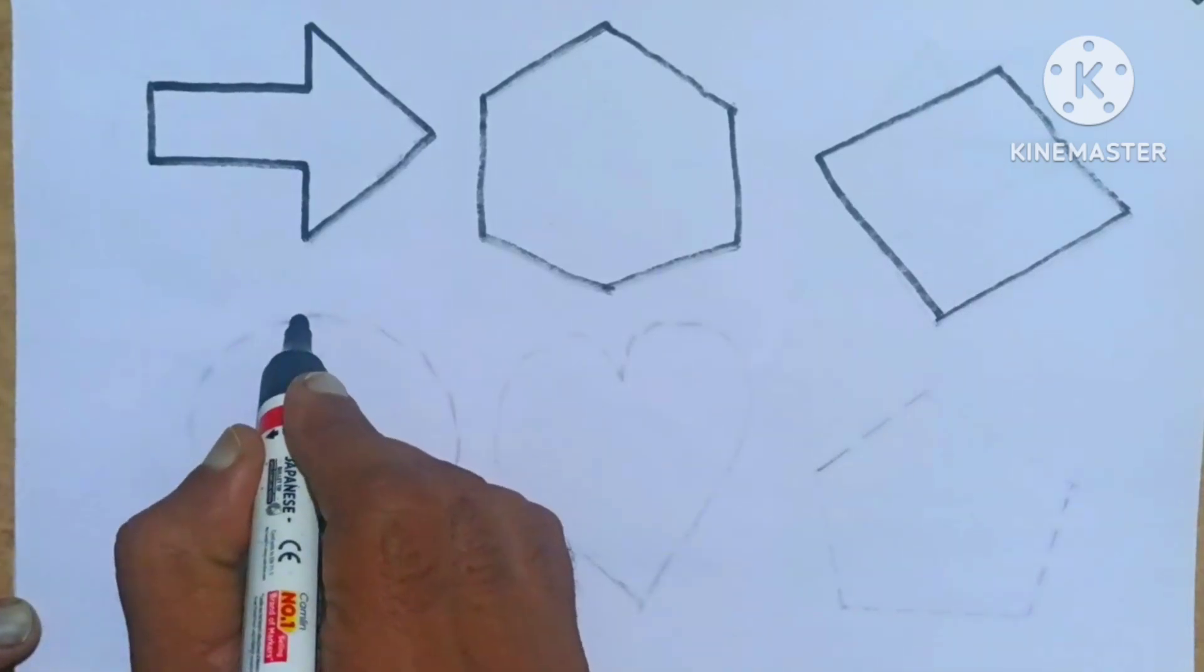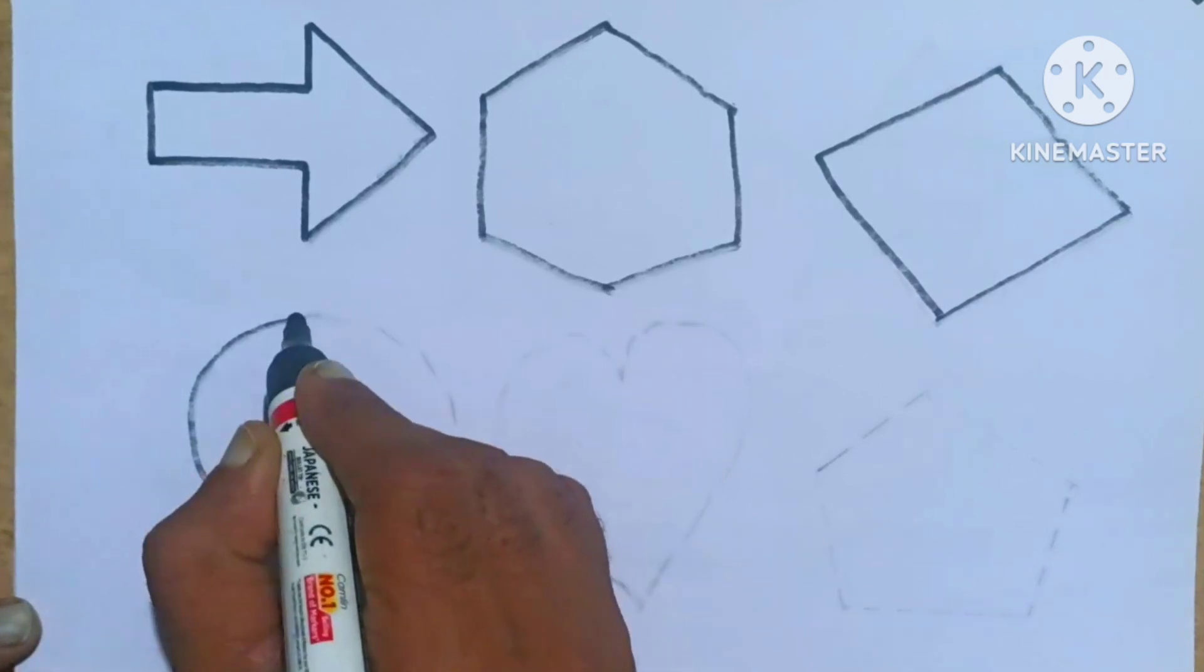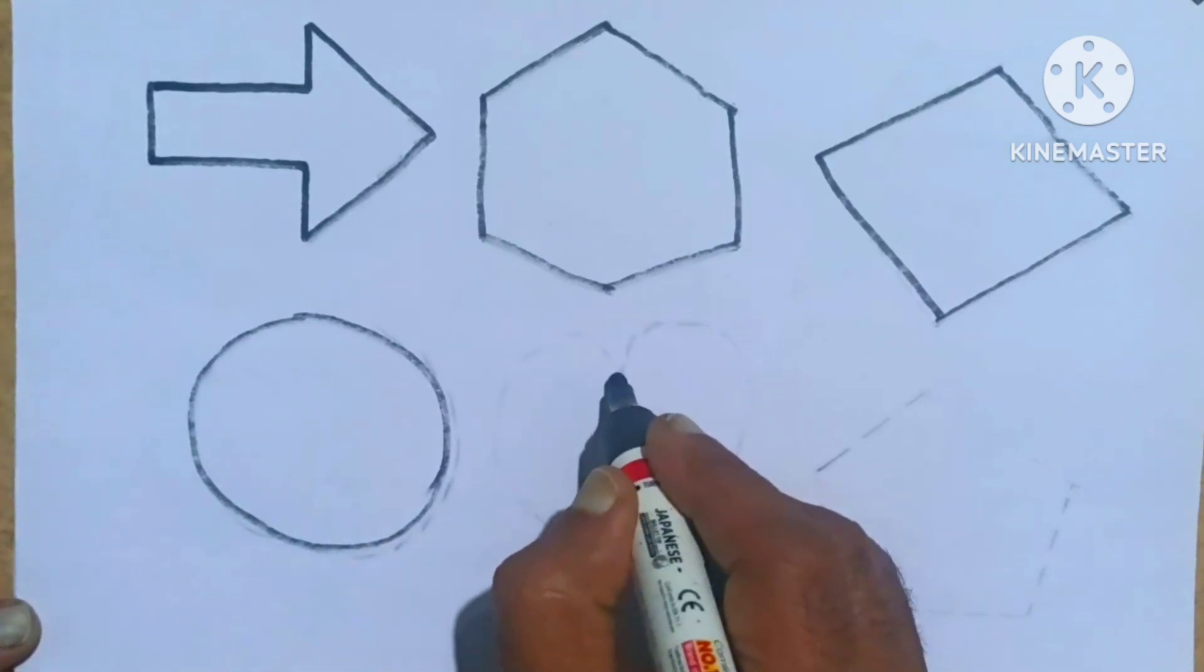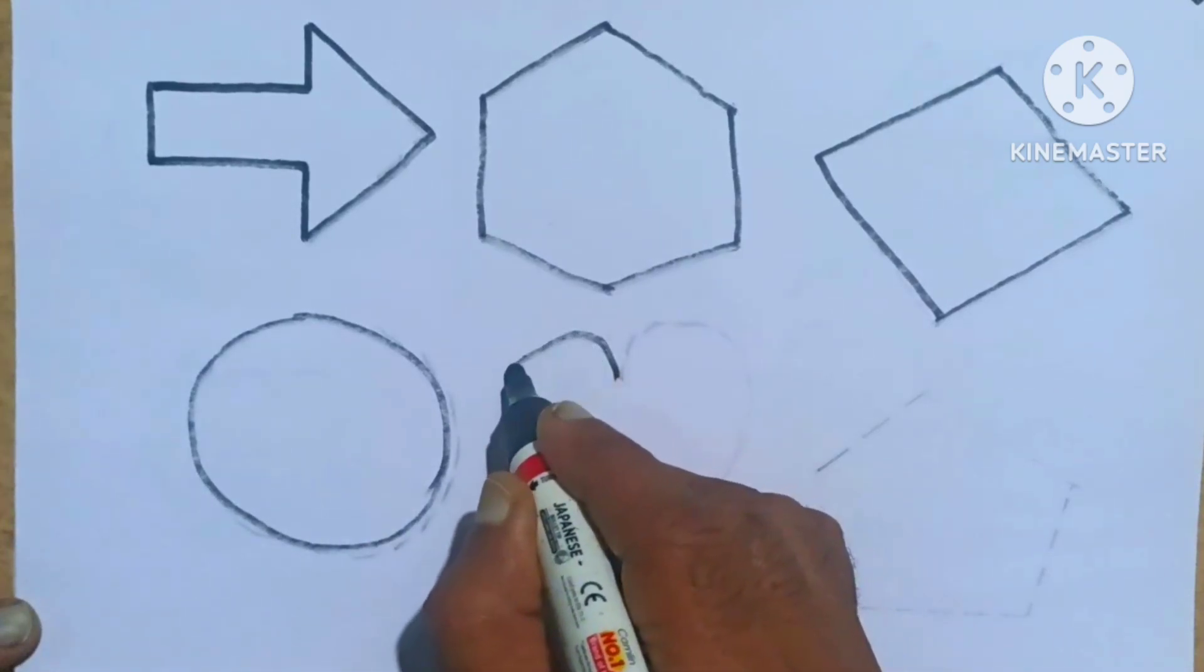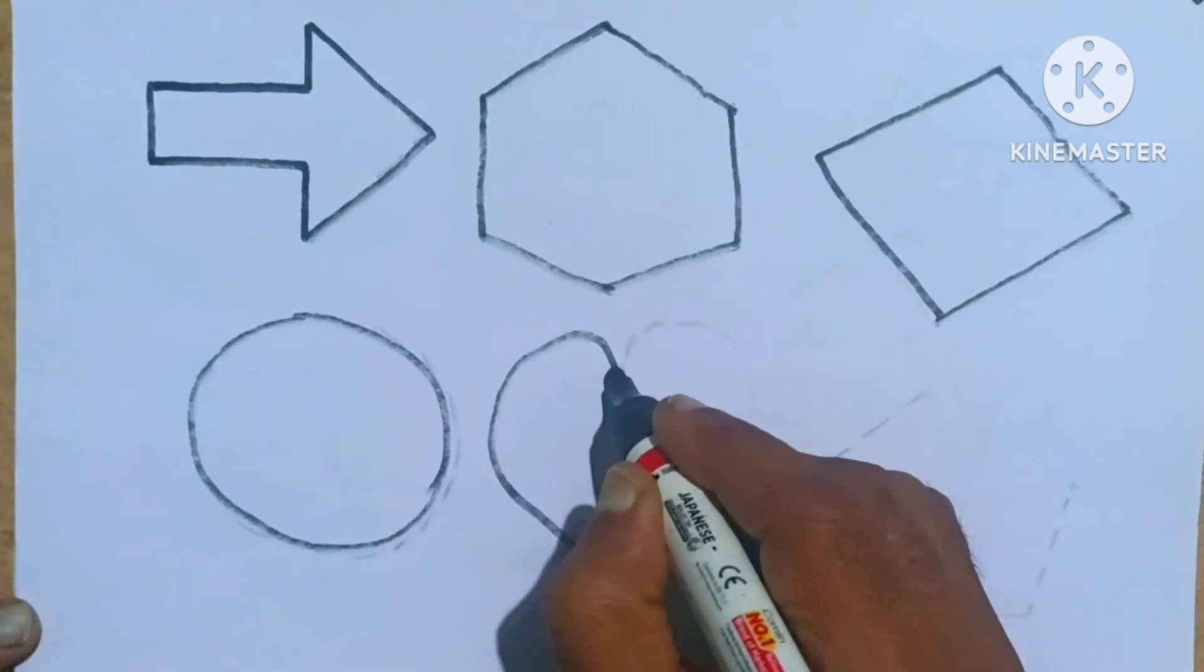Circle. It's a circle shape kids. Heart. Which shape is this? It's a heart shape.